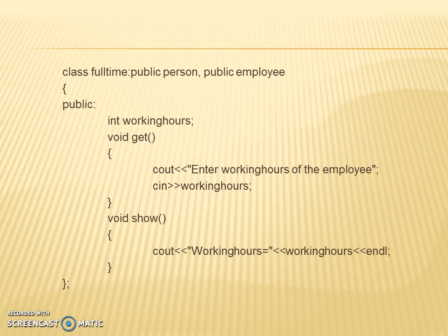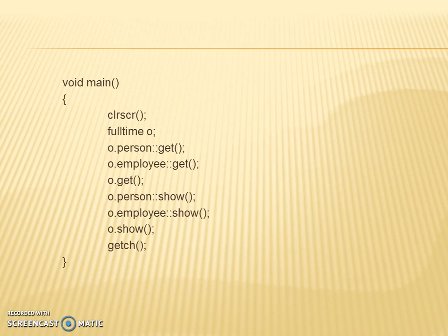Int workinghours, void get() method function which will help us to take working hours of the employee. It will help us to show the working hours and all the information regarding the person, employee, and working hours. This will be received into the void main function.